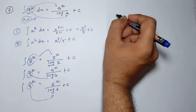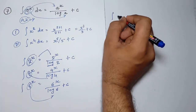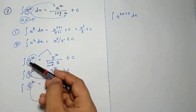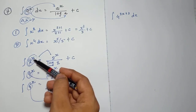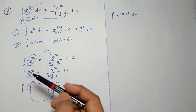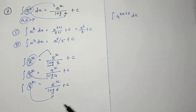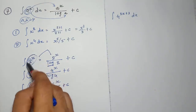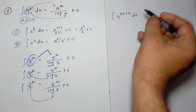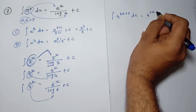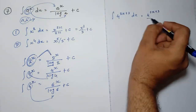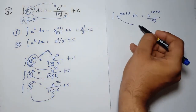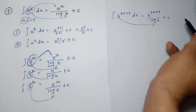Let's take more examples. Suppose 4 raised to 2x plus 3 is given. Rule number 7 applies here because x is the power. So: 4 raised to 2x plus 3 as it is, divide by log 4, plus c.